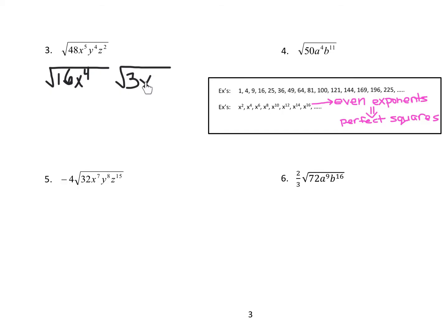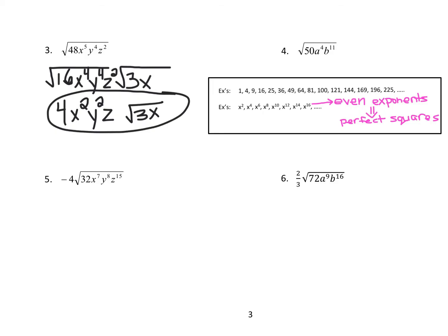Now if you look at the last two terms, these are perfect squares because they have even exponents — as long as you have an even exponent, they're perfect squares. So I'm going to bring the whole thing into our perfect square radical. Now we just take the square root of everything in the perfect square radical. The square root of 16 is 4. The square root of x to the 4th — cut the exponent in half — is x squared. The square root of y to the 4th is y squared. The square root of z squared is just z. Then we bring down the leftover radical. This is in simplest radical form.